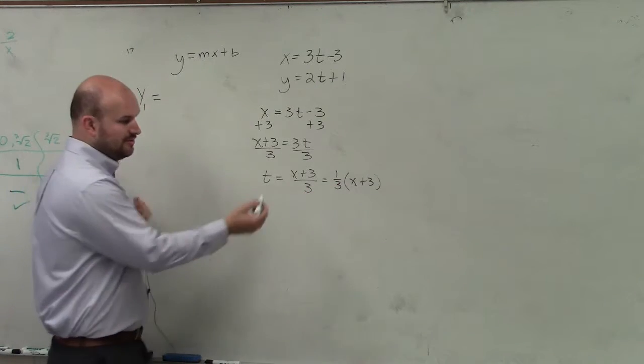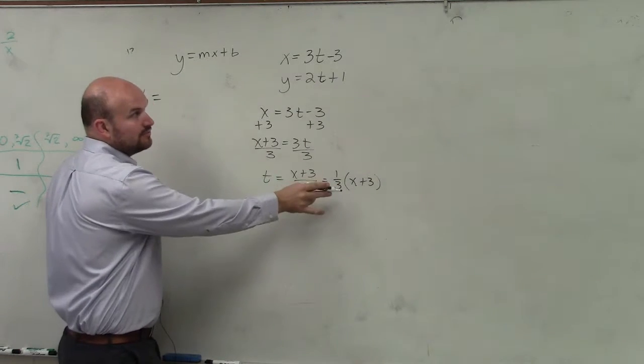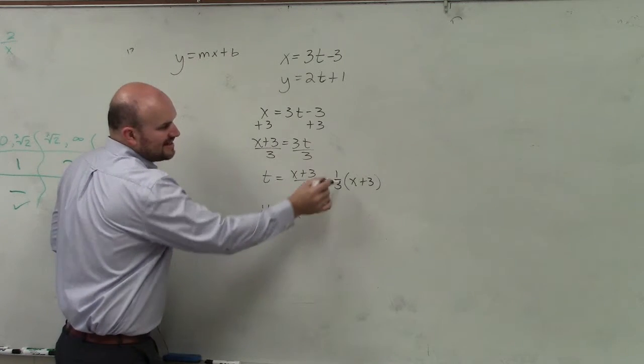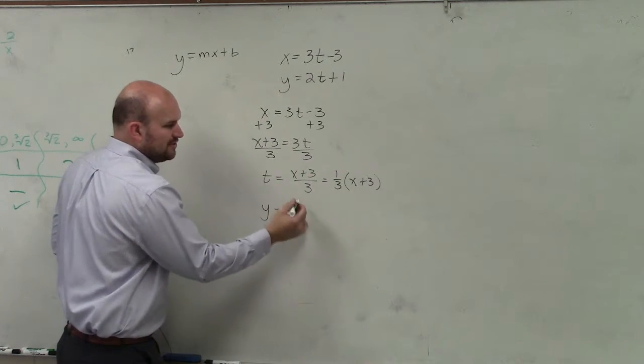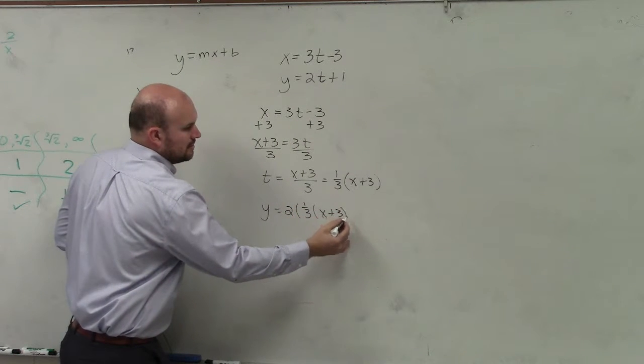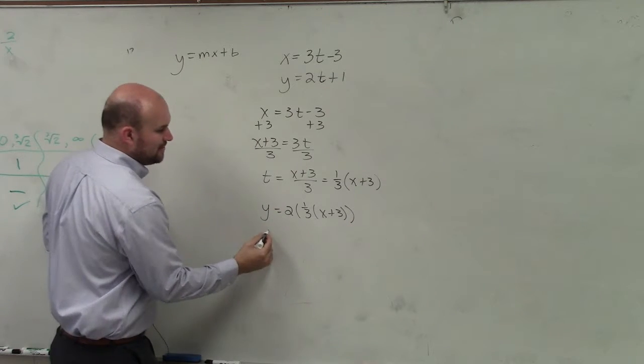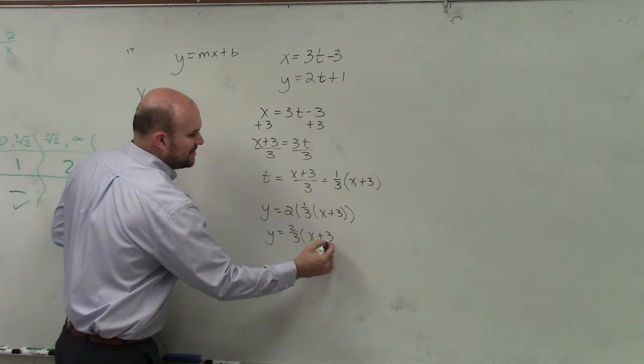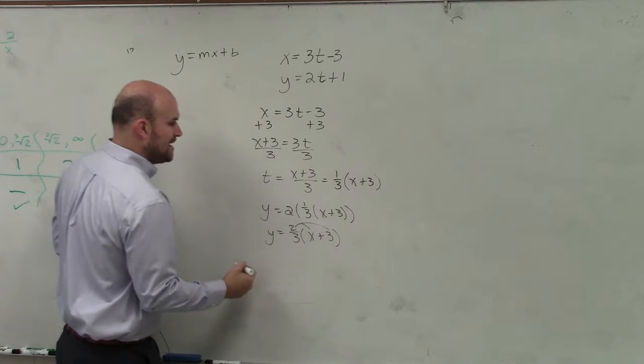Now, what I'm going to do is I'm going to replace t with what it's equal to. So y equals 2 times—I like using this form then that form, but you can do either one. Those multiply. y equals 2 thirds times x plus 3. And then you just apply distributive property.